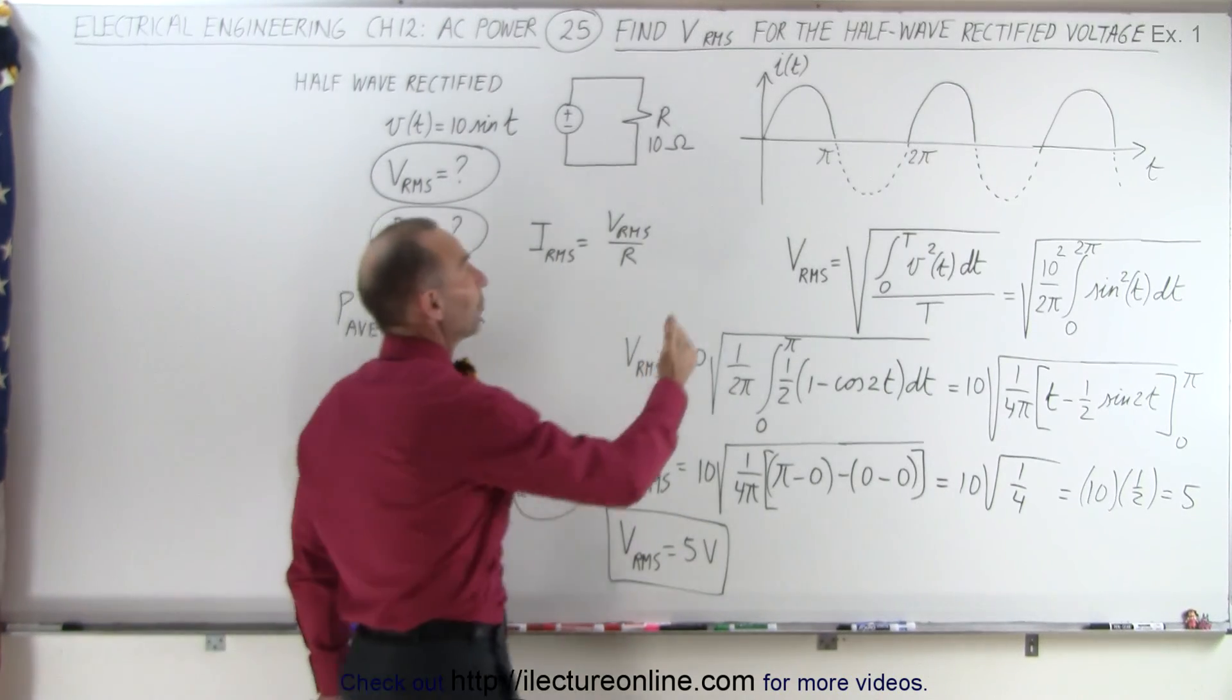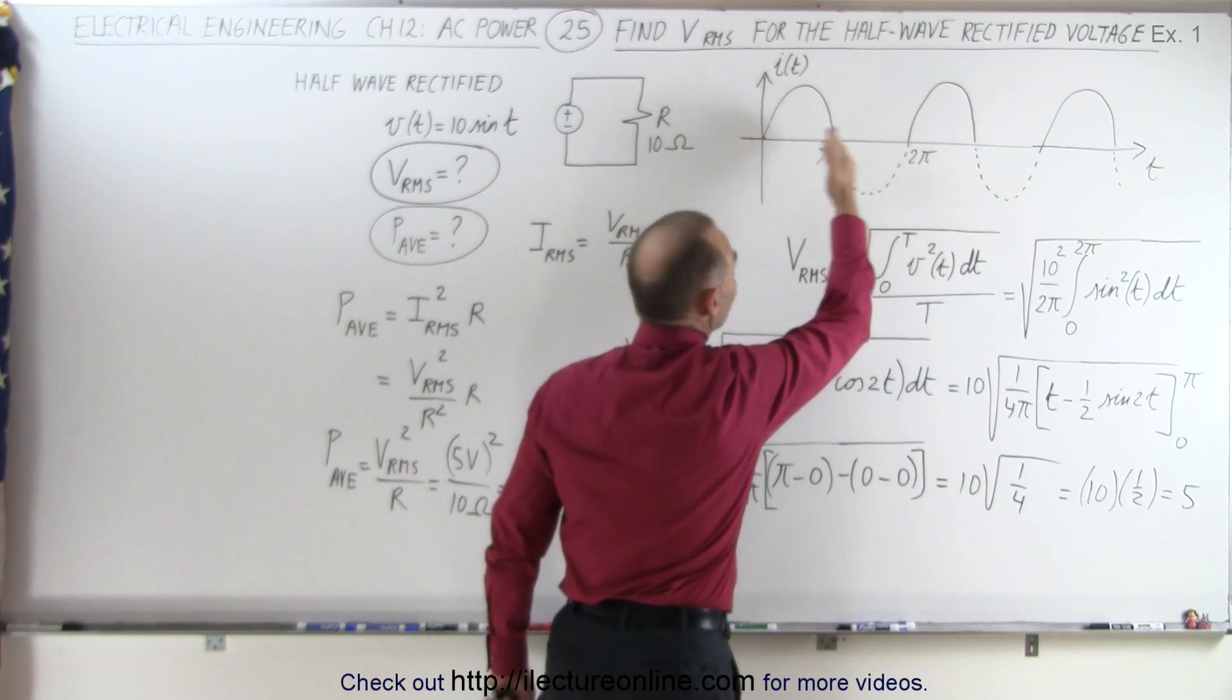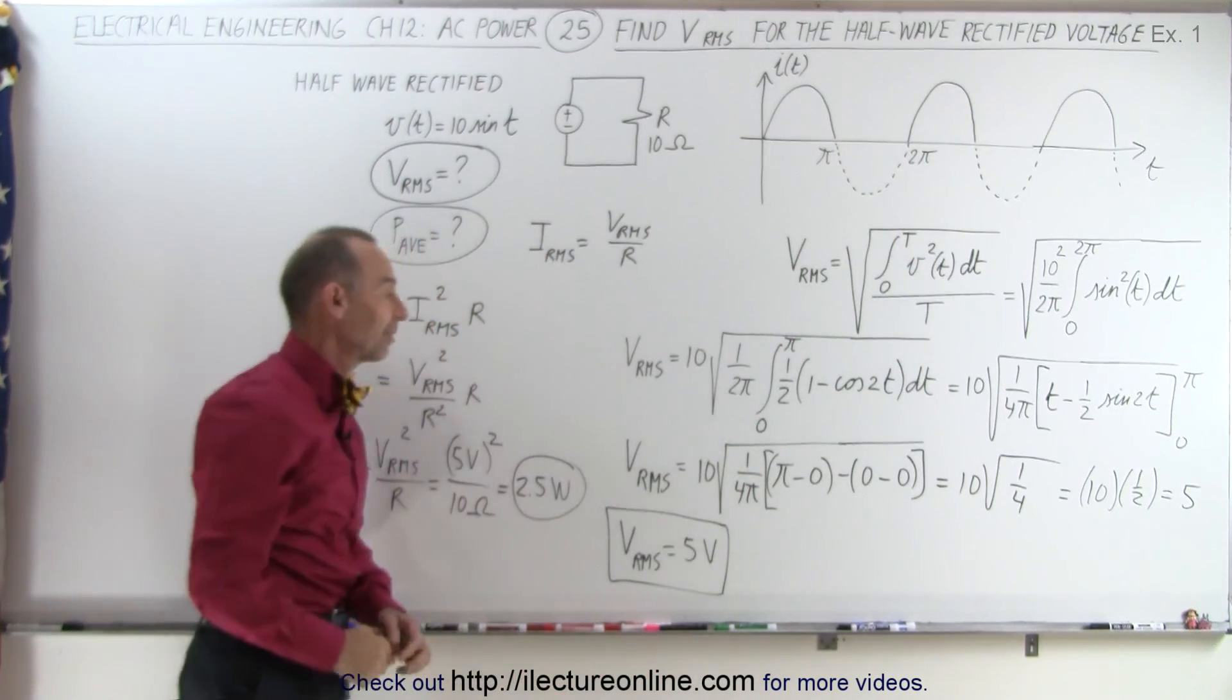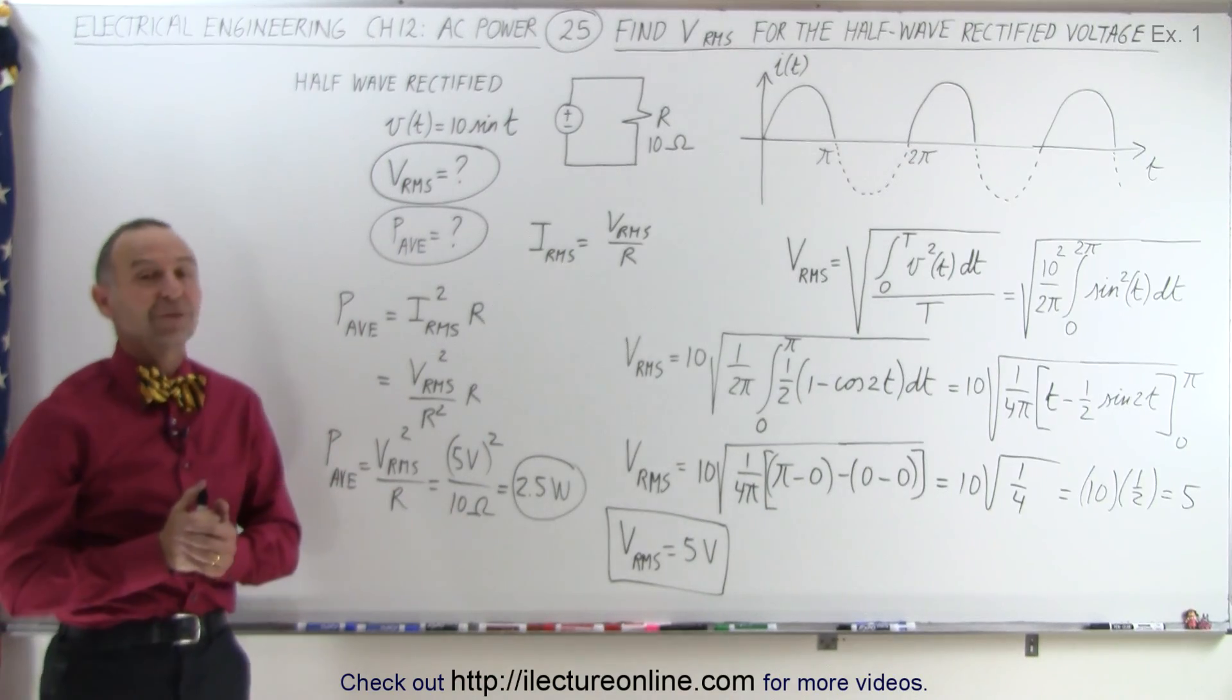And that is due to finding what we call the effective voltage of the circuit by doing the integral over the half-wave rectified voltage. And those are the results. That's how it's done.